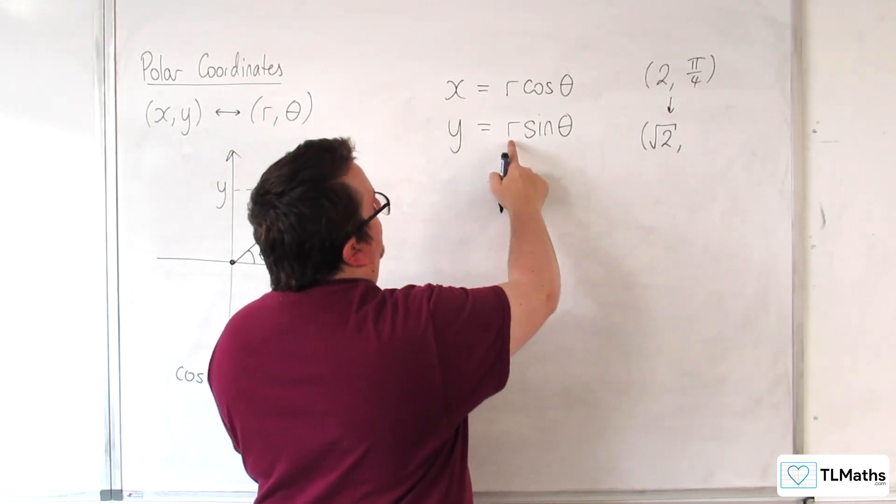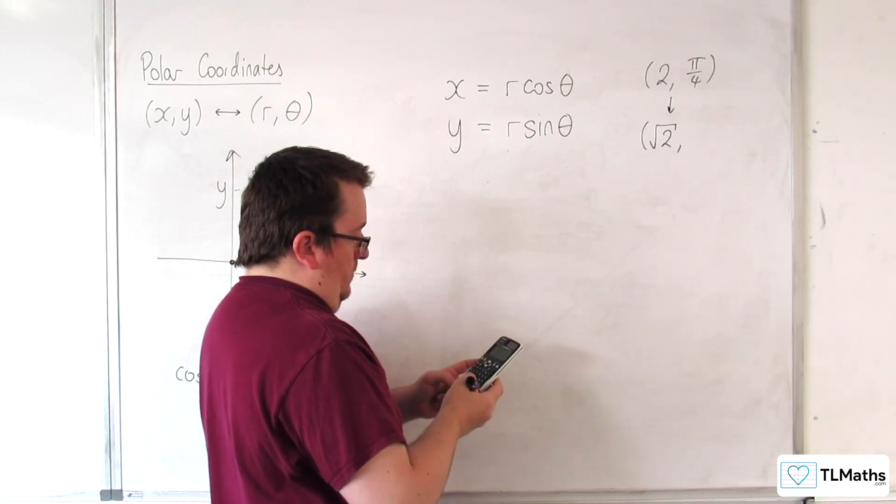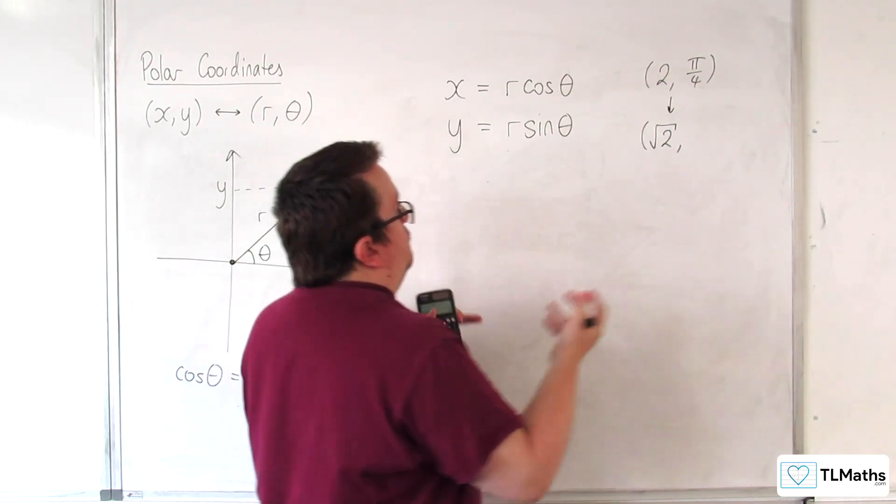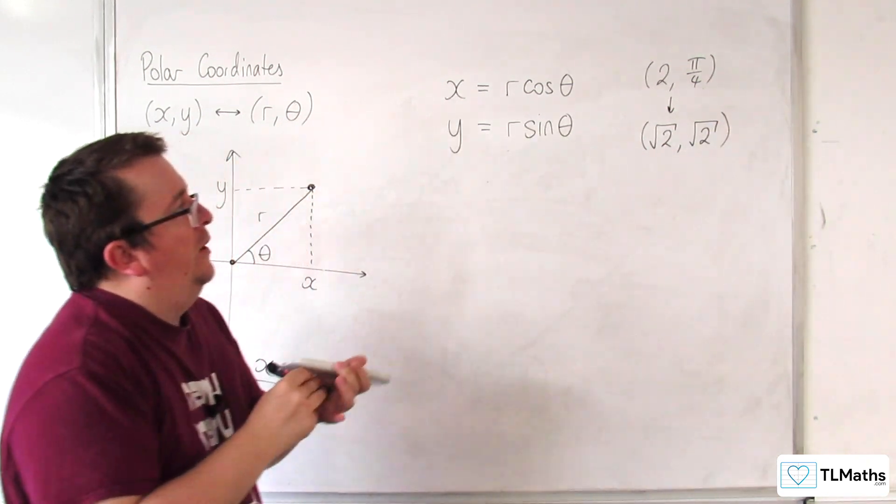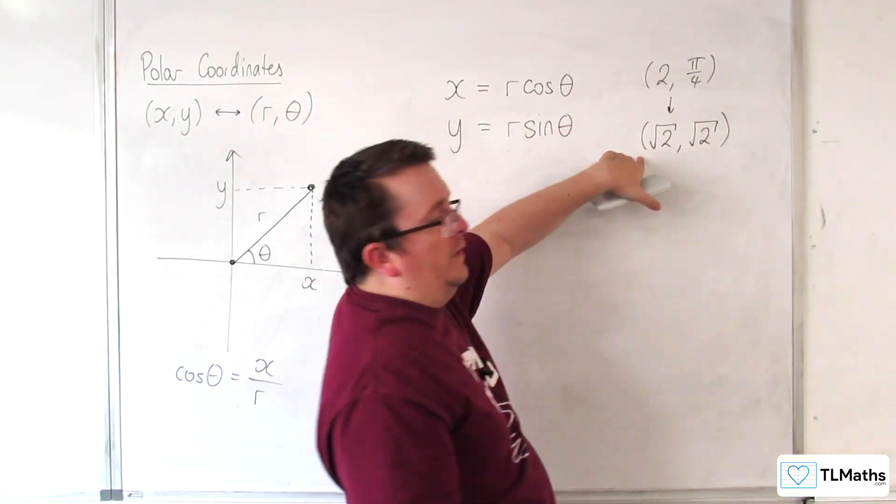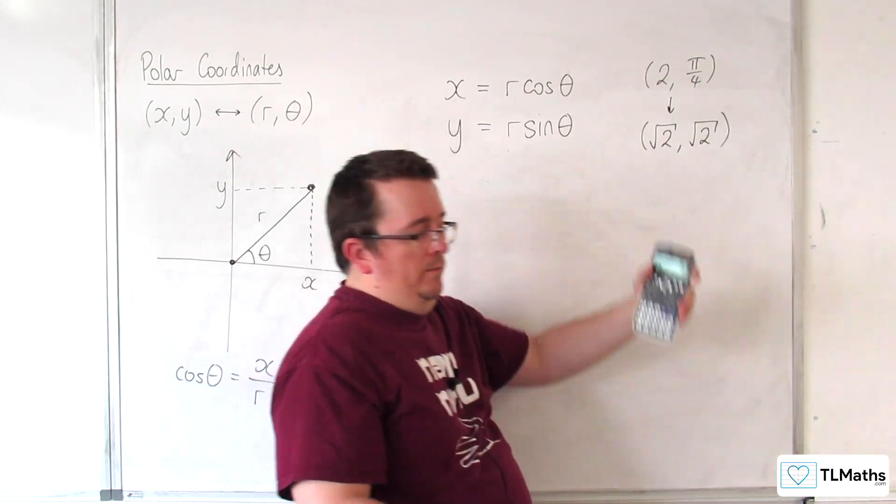And then, we would put in 2 sine of π/4, which should be root 2 as well. So the polar coordinates (2, π/4) in Cartesian form is (root 2, root 2).